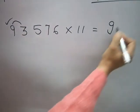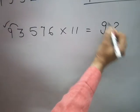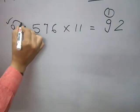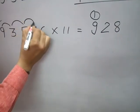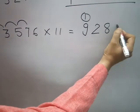9 plus 3 is 12. I am writing this 2, 1 is carry over. 5 plus 3 is 8, 5 plus 7 is 12.